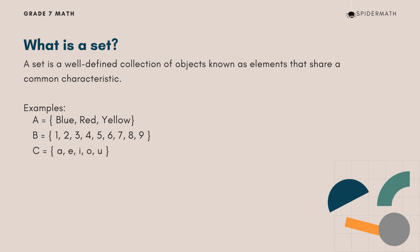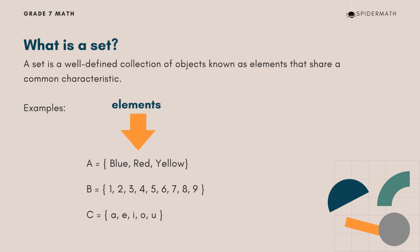In mathematics, a set is a well-defined collection of objects known as elements that share a common characteristic. What differentiates a set from any group is that a set is well-defined. An element can be almost anything, such as numbers, functions, or lines. You can think of it as a box with things inside — the box is the set, and the things are the elements.